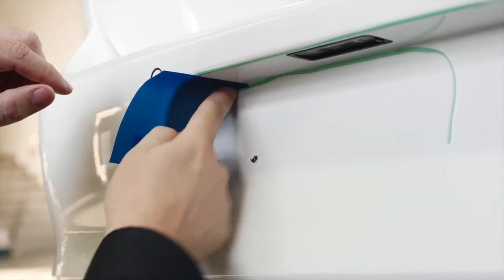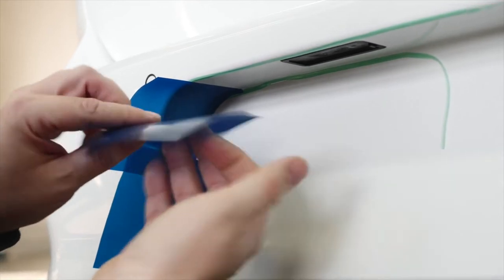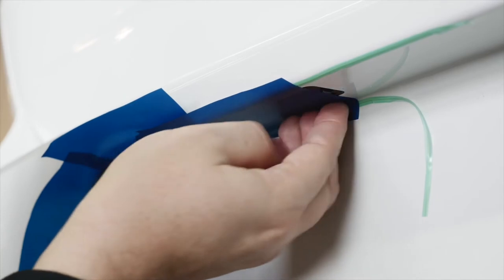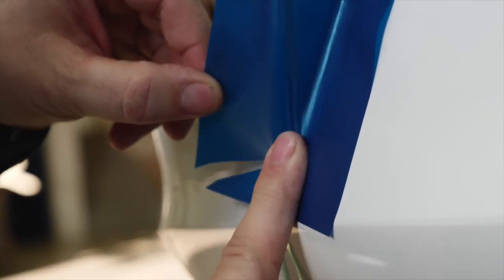Attach appropriately sized wrapped film pieces to the recess in order to form the stencil. Make cuts in the film to remove the tension from the corner.